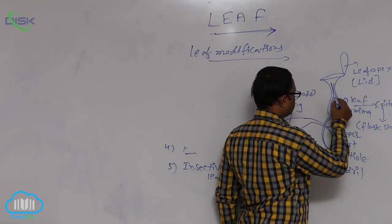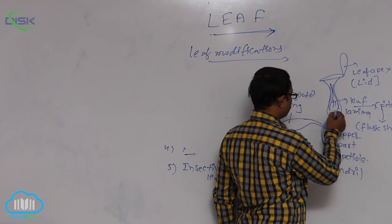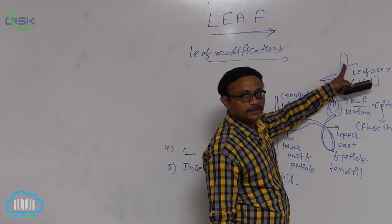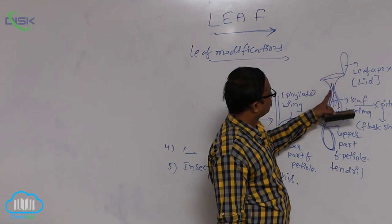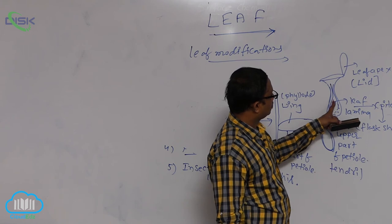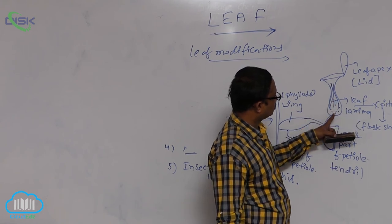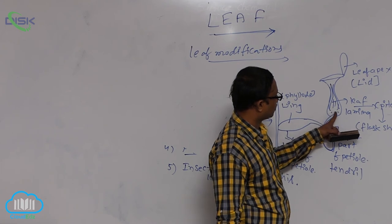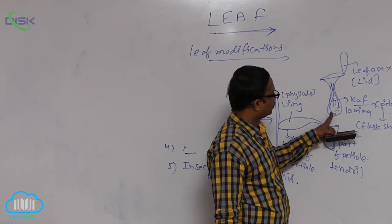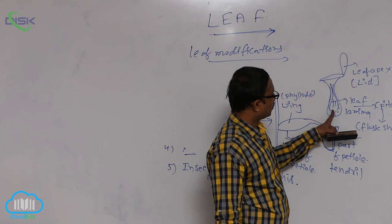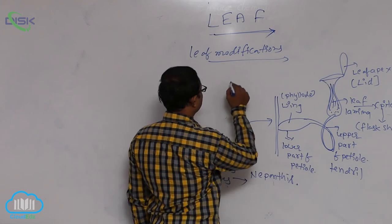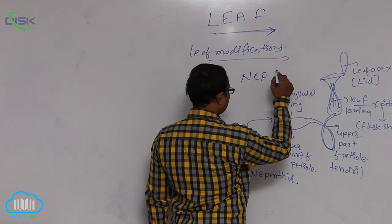Inside the pitcher, nectar glands and proteolytic enzymes are present. When insects are attracted by the lid, they enter inside the lamina or pitcher. The insects slip down and fall onto the slippery surface. By the proteolytic enzymes, insects are digested. After that, the plant absorbs nitrogenous substances. That is Nepenthes, generally grown in the Assam forest region.